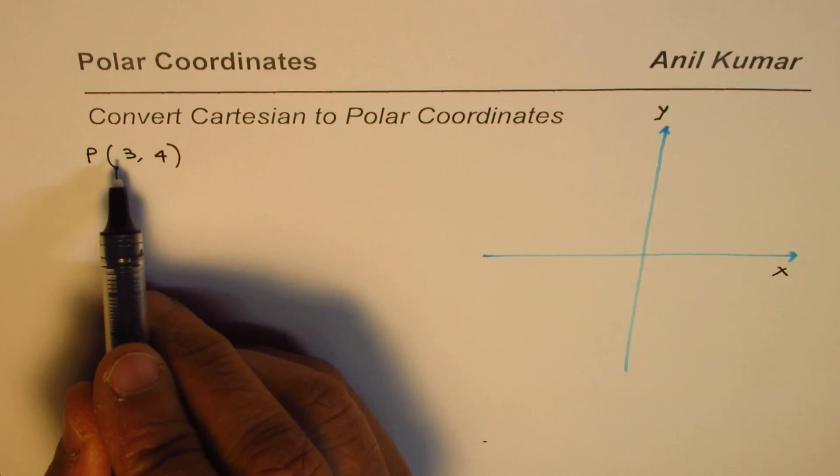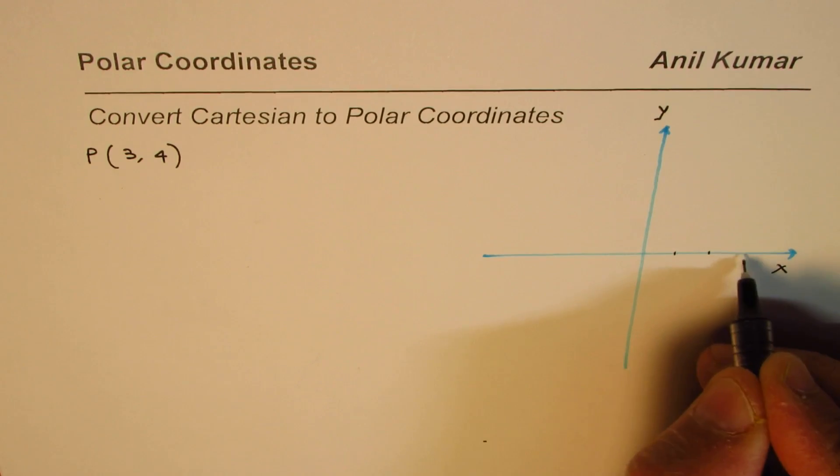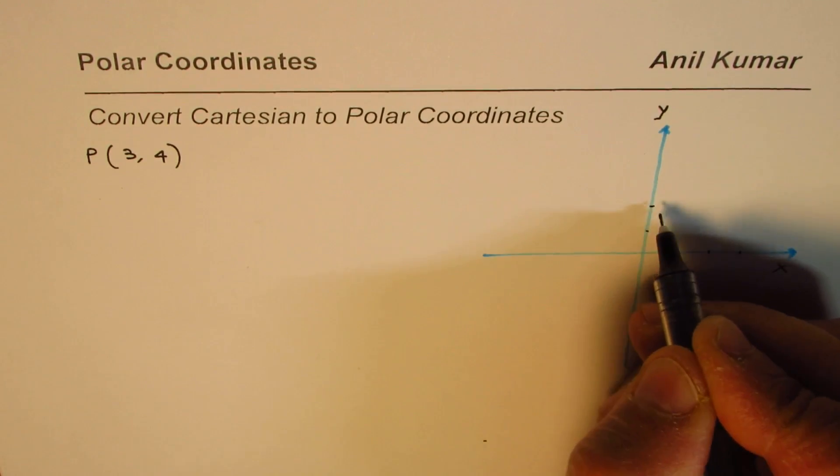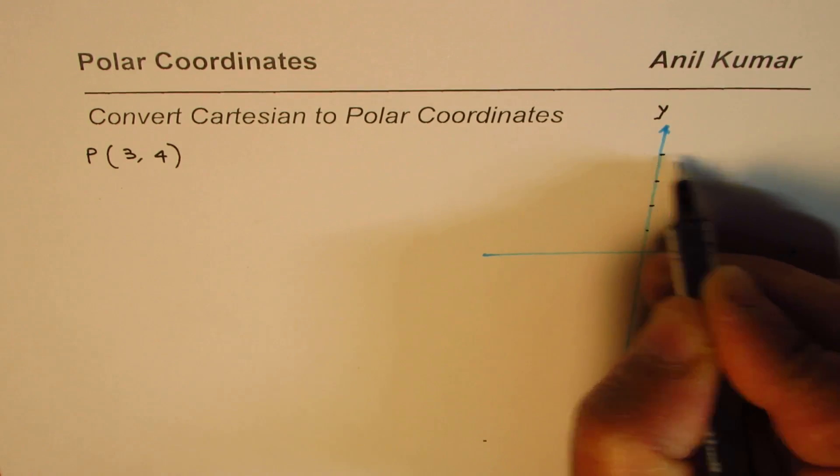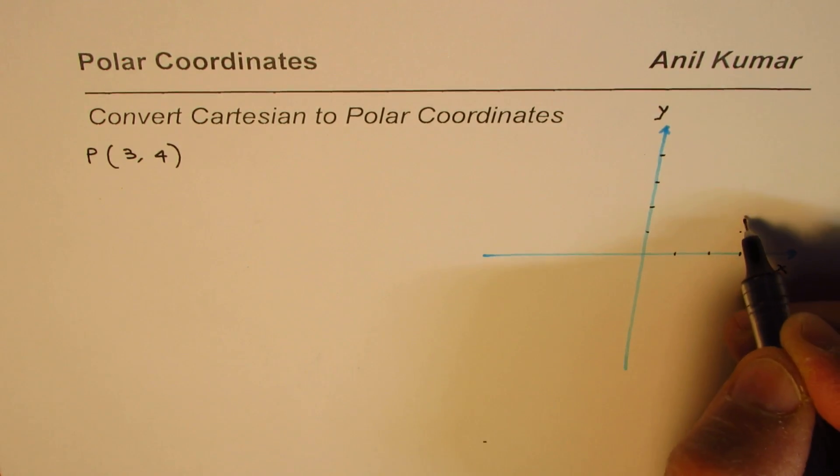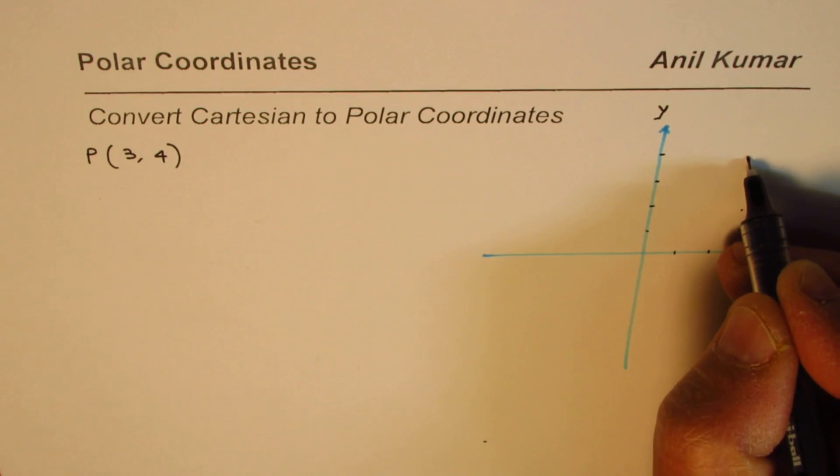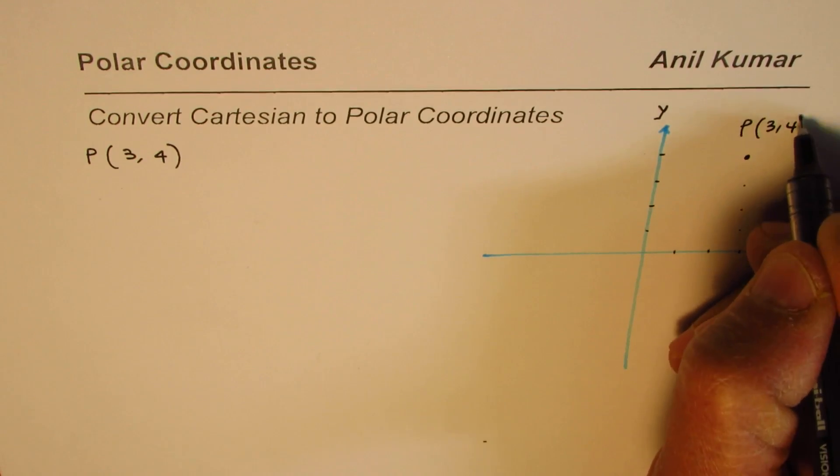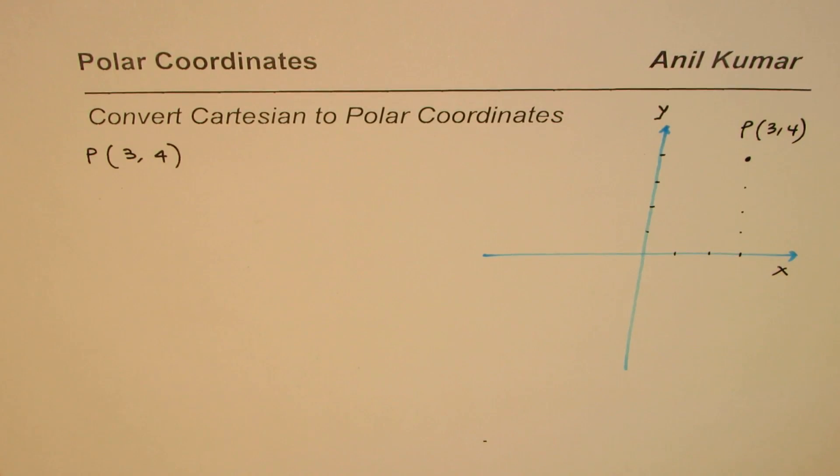So point P which is 3, 4 really means you move 1, 2, 3 units along the x. Y is vertical. So move 4 units along the y. That means 1, 2, 3 and 4. You get to the point. And this point P is 3, 4. So that is how you get a point on the polar coordinate system. I mean on the Cartesian plane.